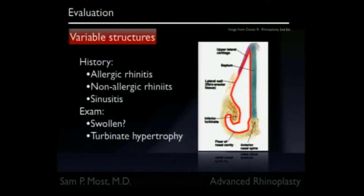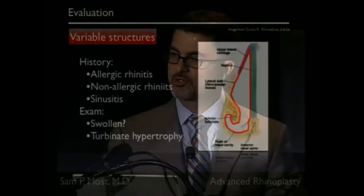With allergies and other things, this thickness can vary, so this is a variable structure. When we talk to patients, we ask about their history of allergy disease — allergic or non-allergic rhinitis, sinus disease. We look in the nose to see if there's evidence of swelling or other telltale signs of allergic disease.